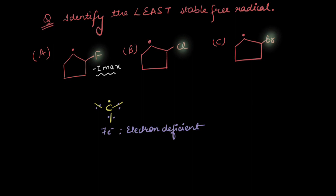And if fluorine is pulling electron density from a poor free radical, would the free radical be happy? The free radical needs electron density to be stabilized, but here all three groups are pulling electron density from it. So, the one that shows the least minus-I effect would not destabilize the carbon free radical as much. Since the minus-I effect follows this order, the most stable free radical would be the third one, but we are asked to identify the least stable free radical, which would be the first option.